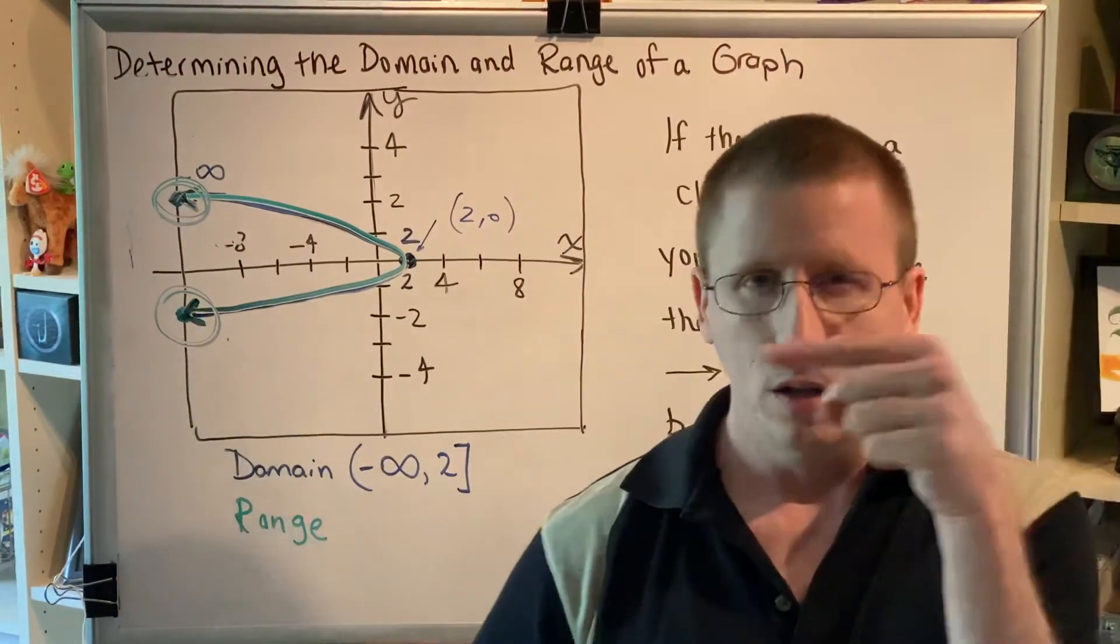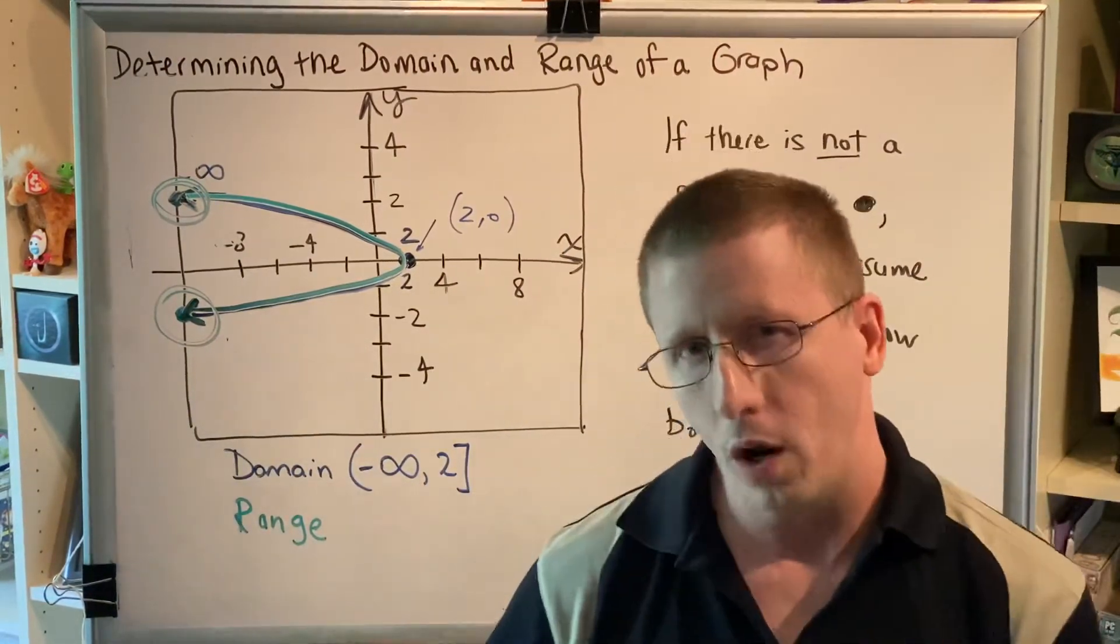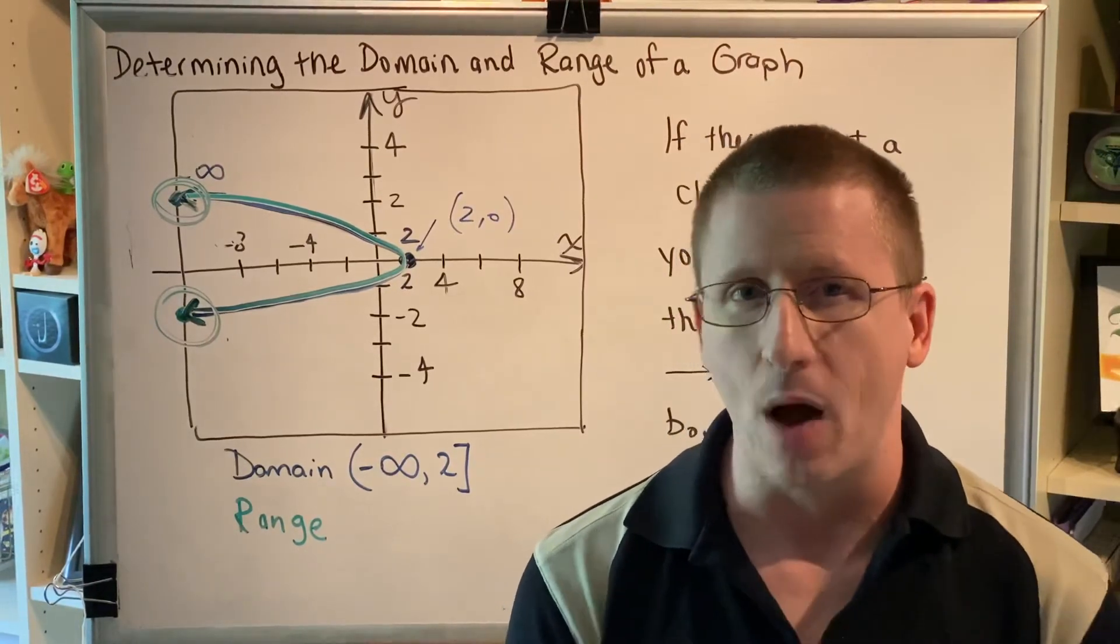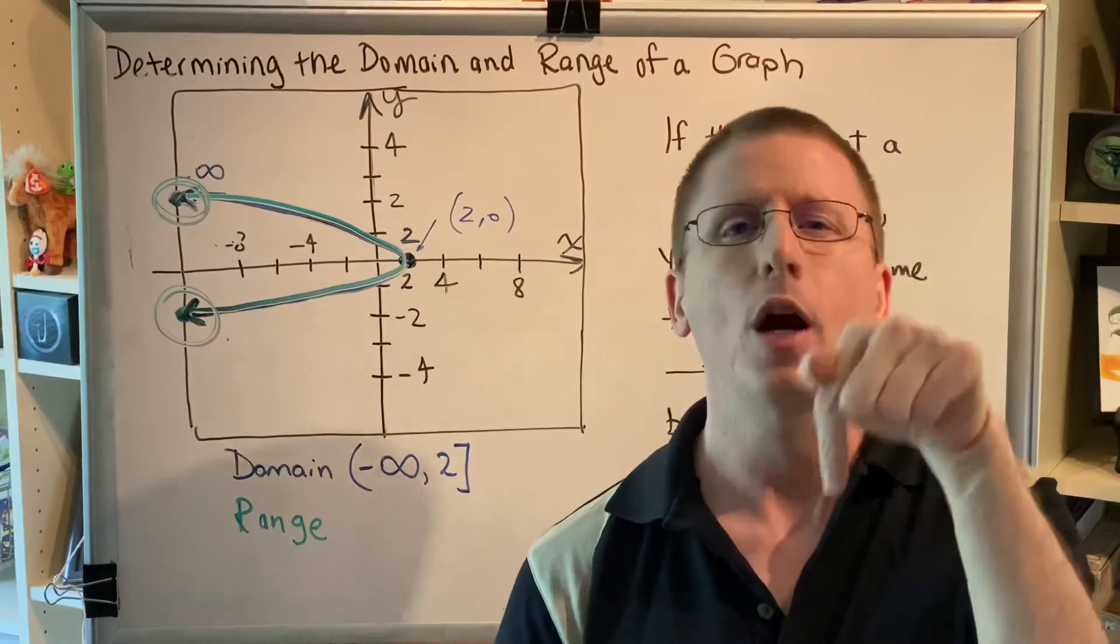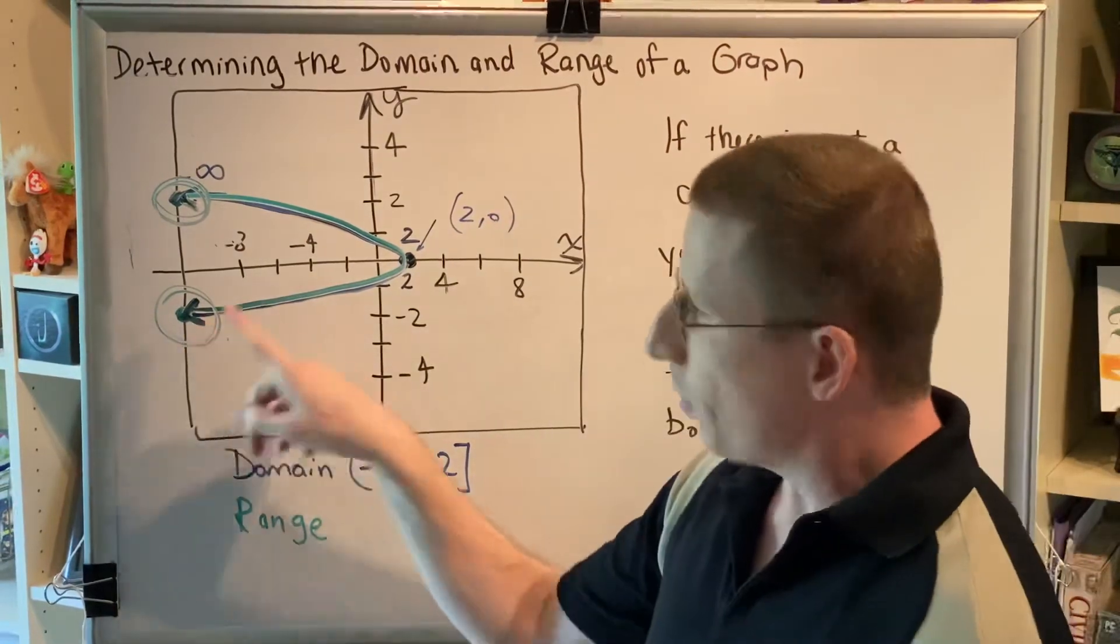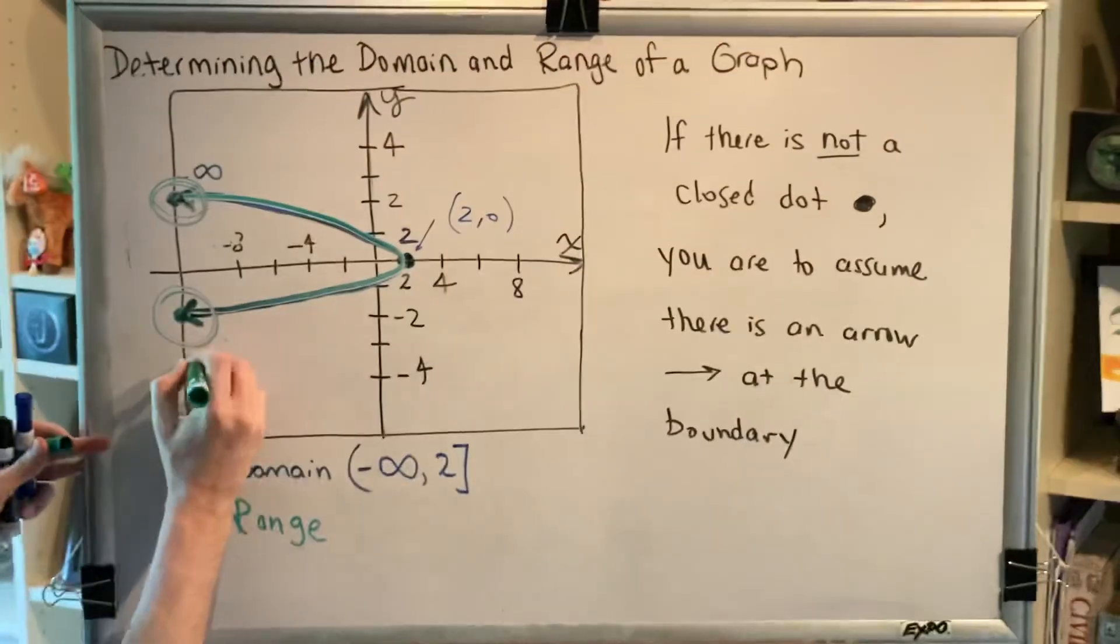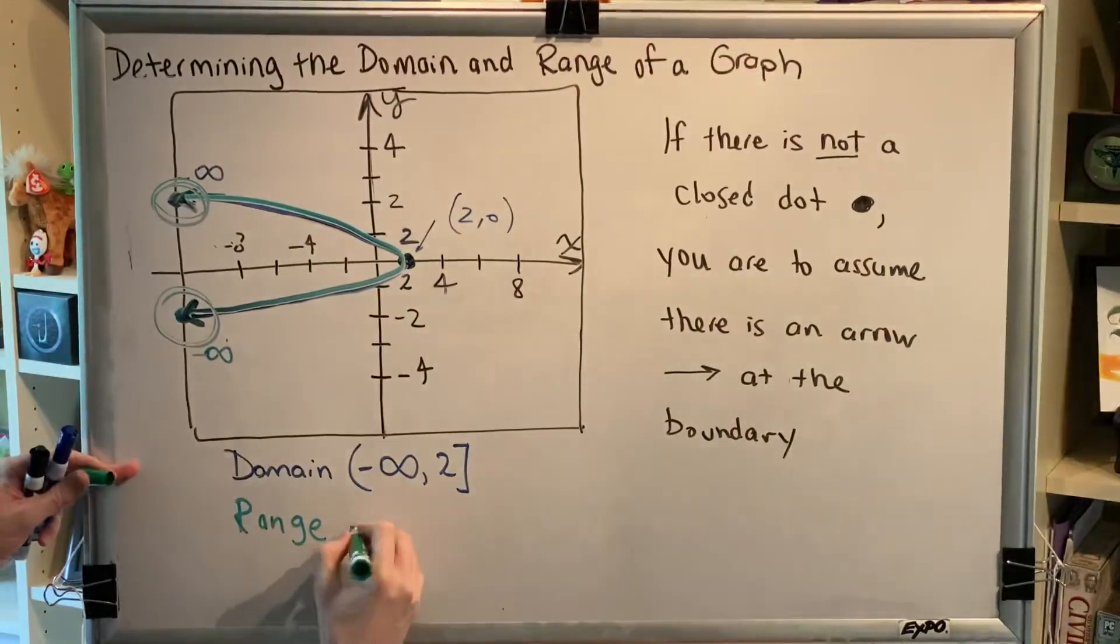Which one of those do we care about for range? Range measures up and down. So we don't care about the left. We only care about the down. So this part of the graph is pointing down forever. And so from a range perspective, that would be negative infinity.